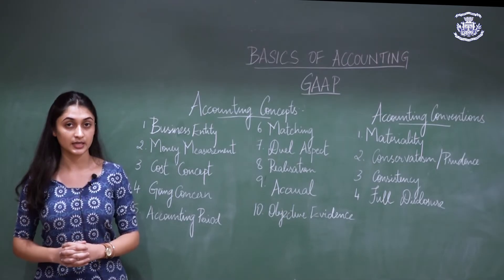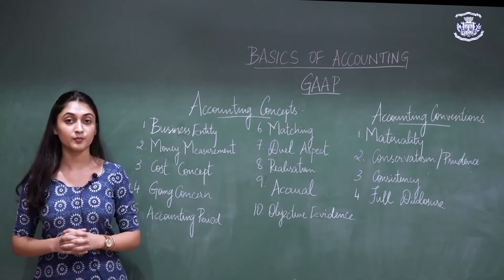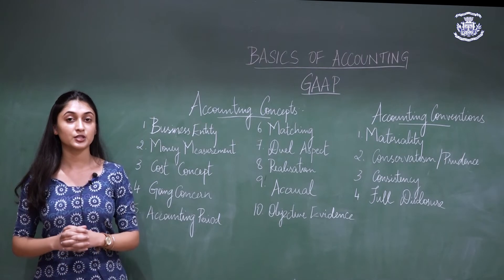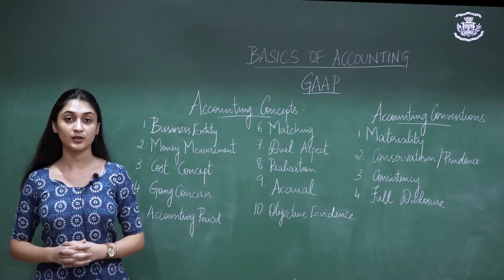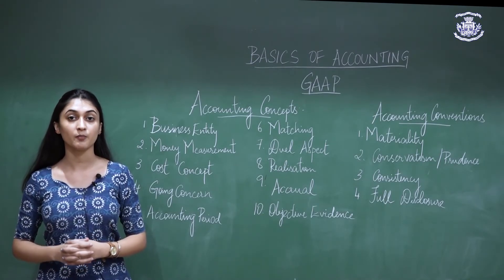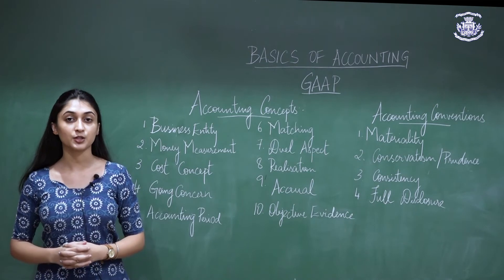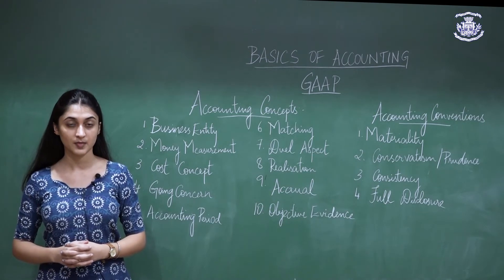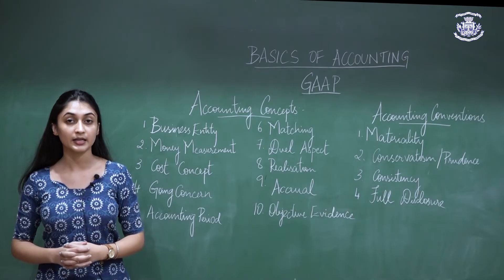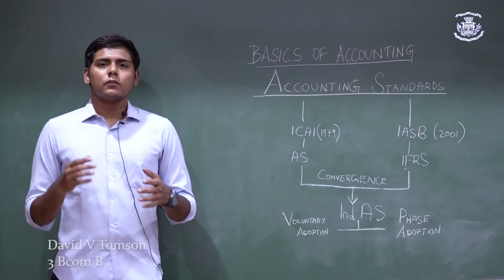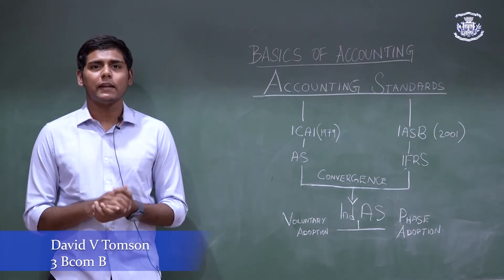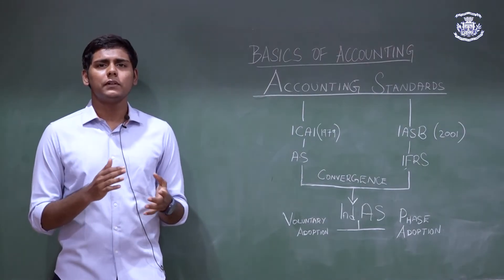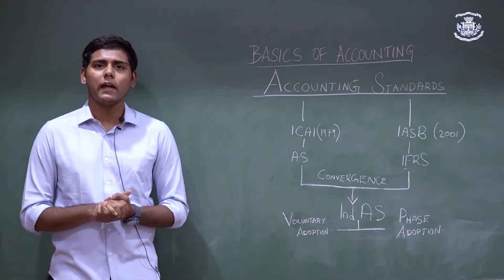The convention of full disclosure states that all material information pertaining to the financial statements should be disclosed in the books of accounts. The accounting concepts are rules and regulations which are to be followed by the company during the preparation of the financial statements, while the accounting conventions are guidelines which are prescribed to help in the presentation of financial information to the end users.